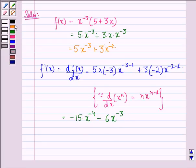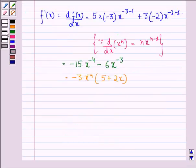Now taking -3x^(-4) common from both terms, we have -3x^(-4) multiplied by (5 + 2x). This can be written as -3 divided by x^4 into (5 + 2x).